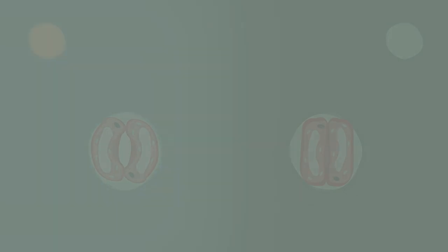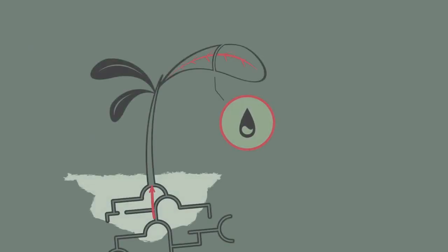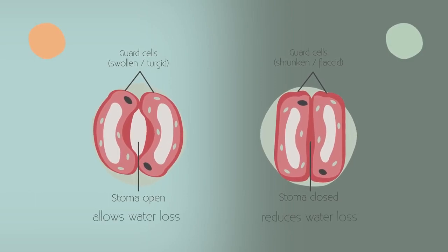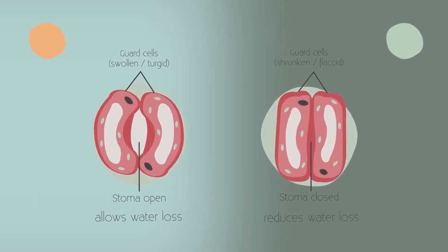So you now know about water movement through the plant, up the xylem, and pulled along the transpiration stream by the transpiration pull. And unsurprisingly, the plant has methods to control water loss by closing the stomata, based upon how flaccid or turgid the guard cells are.